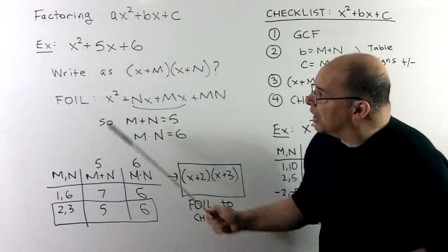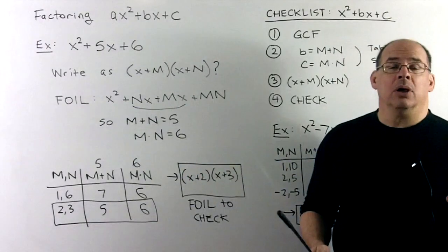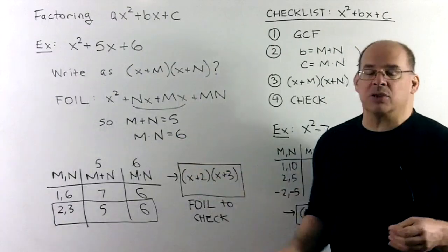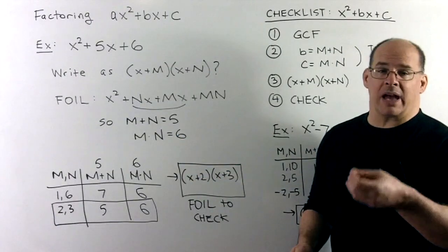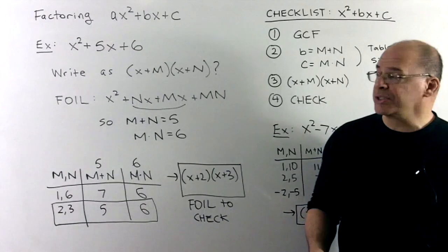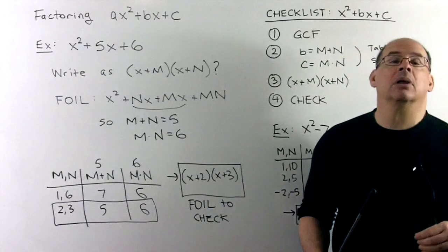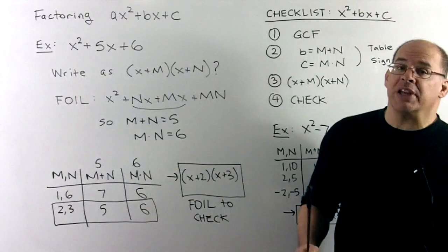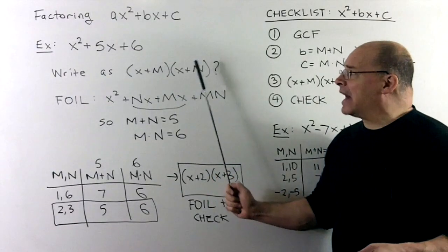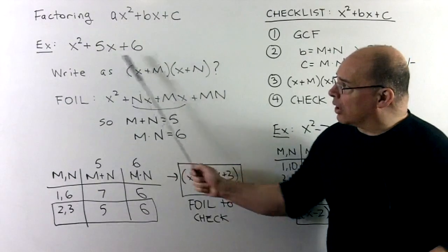Let's consider x squared plus 5x plus 6. We'd like to factor this. Since this leads with an x squared, we want to factor something like x plus something times x plus something else — let's say x plus m times x plus n. The first thing we can try is to FOIL this and see if we can find an m and n that match the numbers in our quadratic.